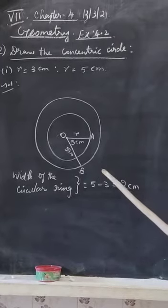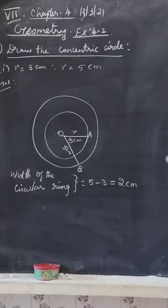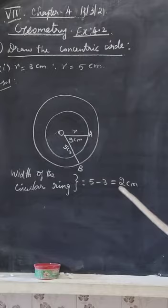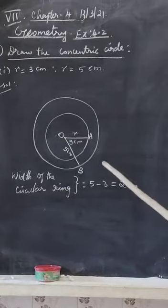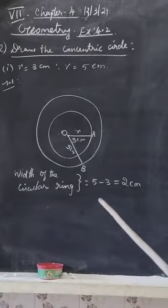You have to find the width of the circular ring. This is the circular ring. In between the two circles, there's a portion of area. So you have to find the area between the two circular rings. The width of the circular ring equals subtracting these two numbers.